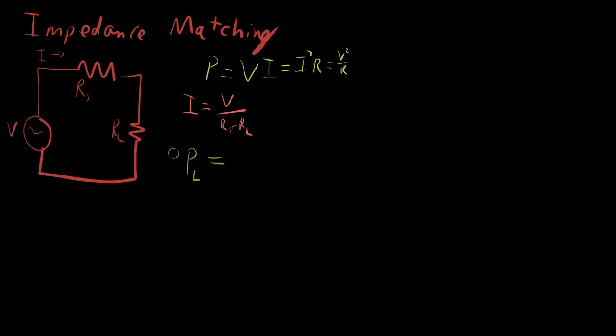Since there's only one current, we can use this current: V over RS plus RL, square it first, squared times what? Times the resistance of the load, which is RL.